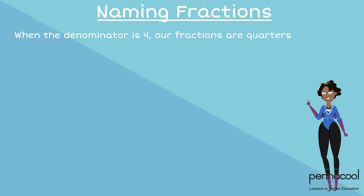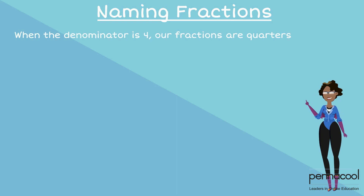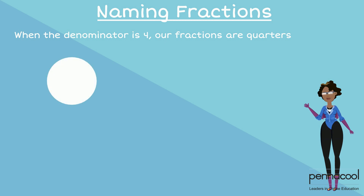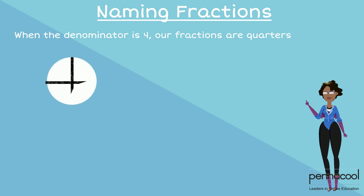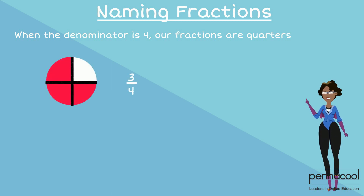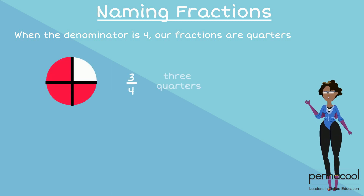When the denominator is four, our fractions are quarters. Hence, if three parts are shaded out of four, the fraction would be named three quarters.